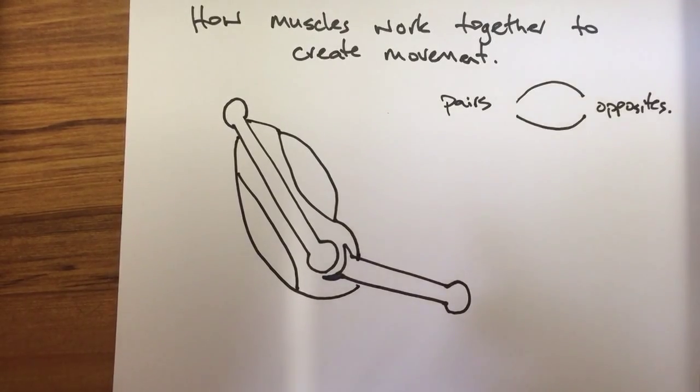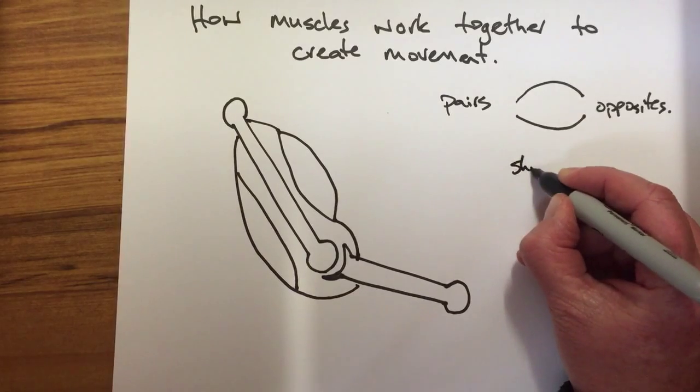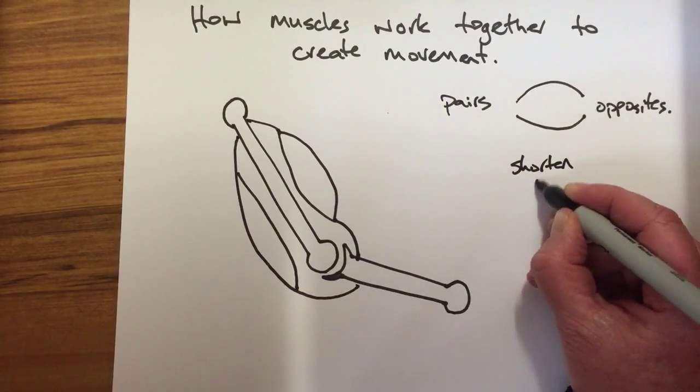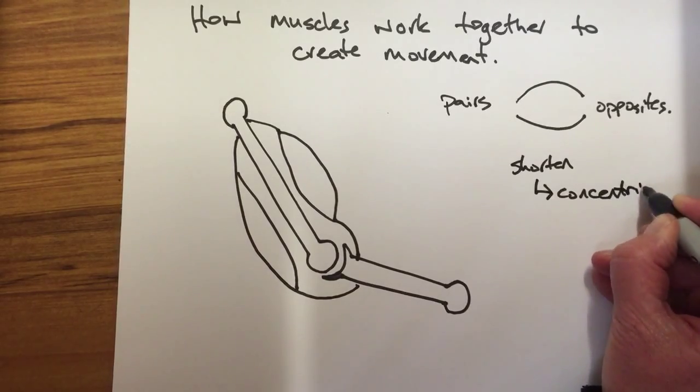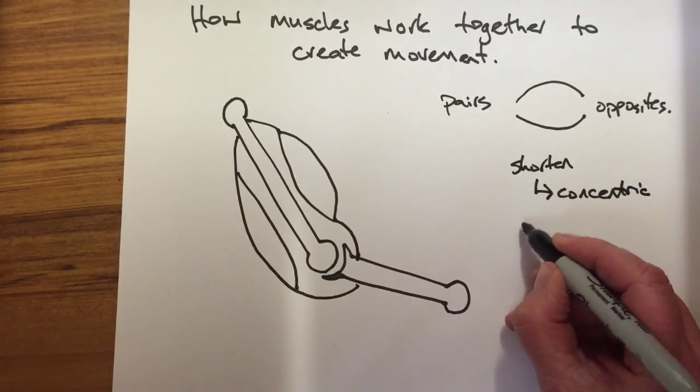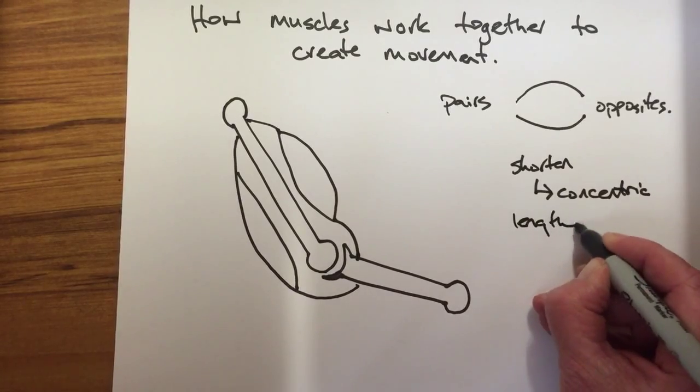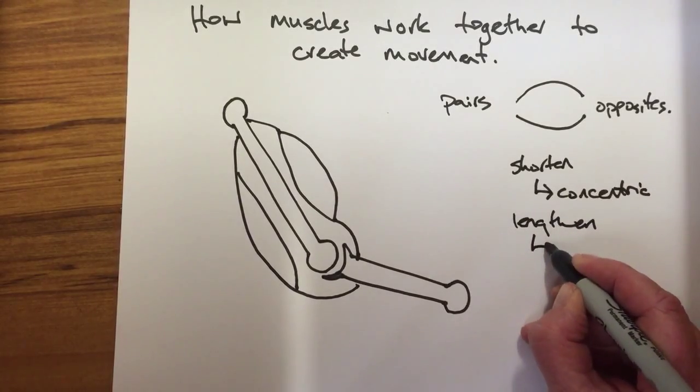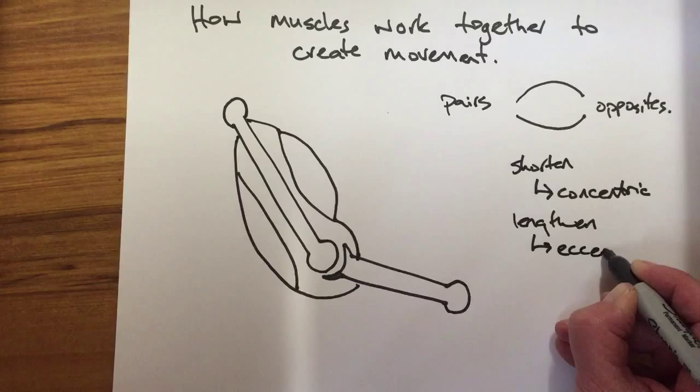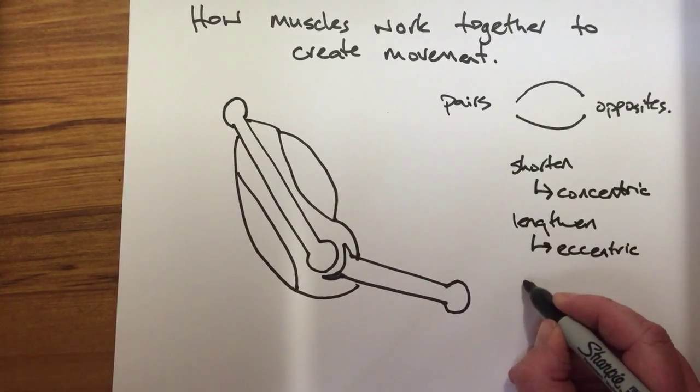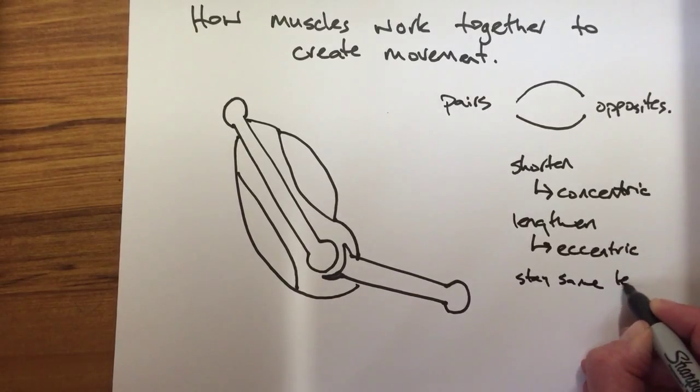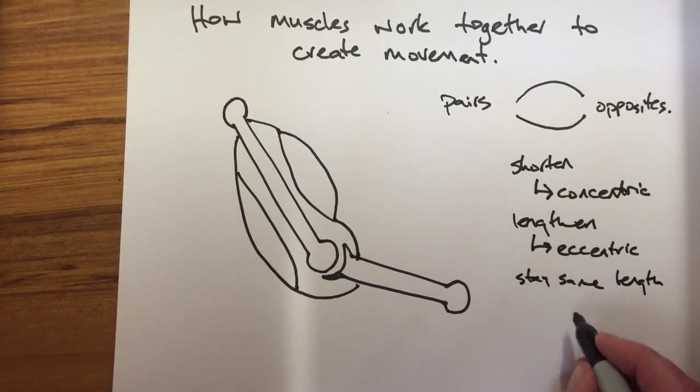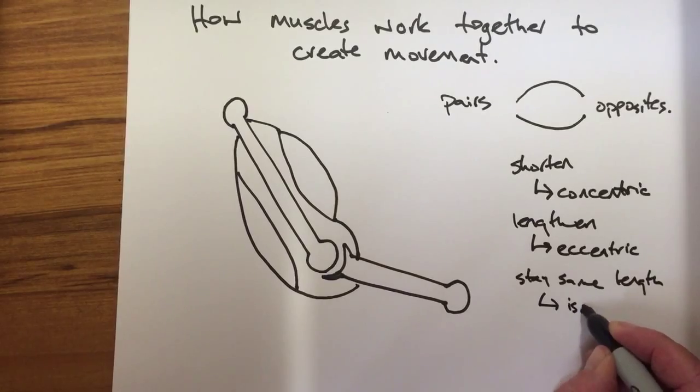So when muscles contract, they can contract in three ways. They can either shorten, which is called concentric contraction. They could lengthen, which is eccentric, or they could stay the same length, and that is called isotonic contraction.